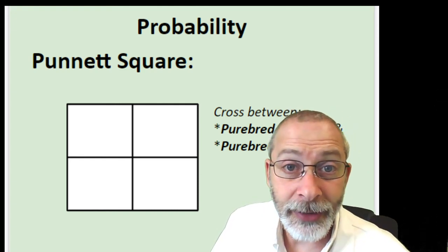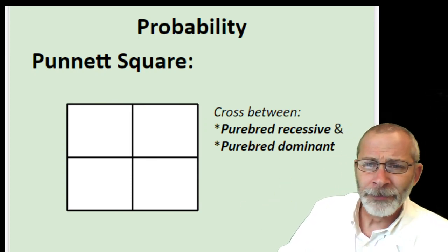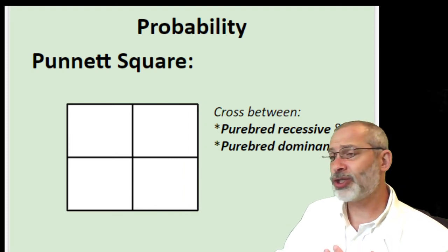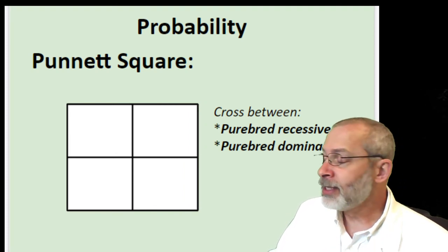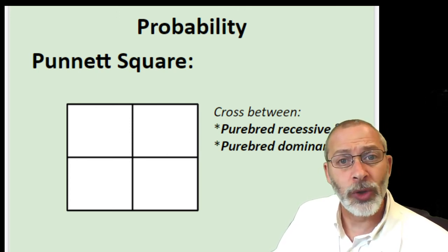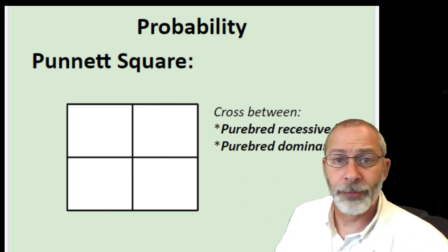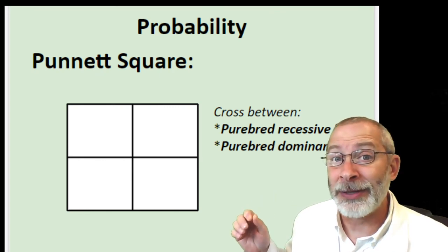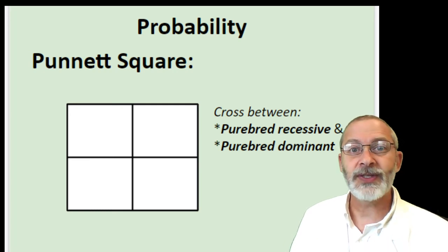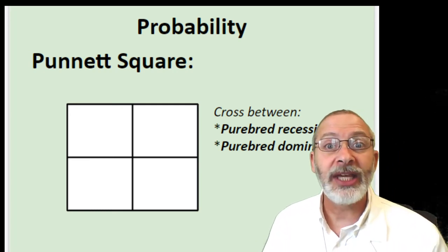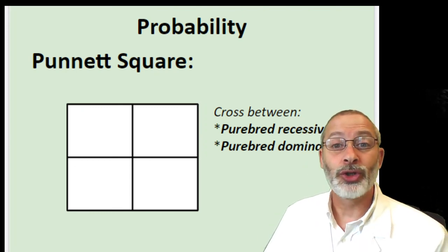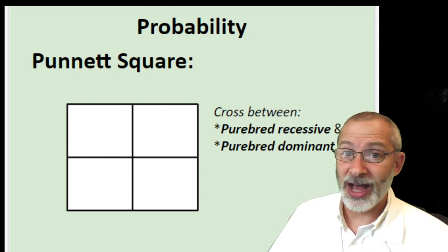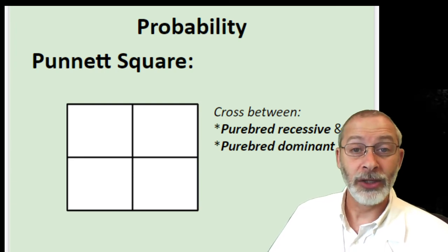A Punnett square is, in fact, four squares in one. For this first example, we're going to cross two organisms. Keep in mind we're not just talking about humans or dogs — it could be plants, it could be any organism that reproduces sexually, meaning a male and a female come together to produce offspring. I want you to think carefully about synonyms, prefixes, and word meaning as we talk about how to create these Punnett squares, because you need to be familiar with the terminology.